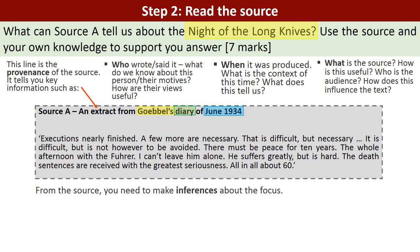Once you have broken down the provenance — the who, the when, the what — you should start thinking at the back of your mind: why has this been produced at this specific time by this specific person? Those thoughts should start to come to you once you've broken down the provenance. But once you've worked your way through the provenance you actually need to read the source itself, because the question is asking you what can the source tell us about the Night of the Long Knives.